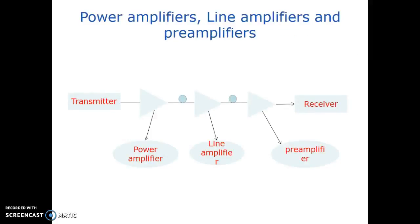For the amplifier structure, it consists of a transmitter, power amplifier, line amplifier, preamplifier, and receiver unit. In between the transmitter and the receiver, the amplifier unit is installed. This amplifier unit is categorized into three types: one is the power amplifier, line amplifier, and the preamplifier.